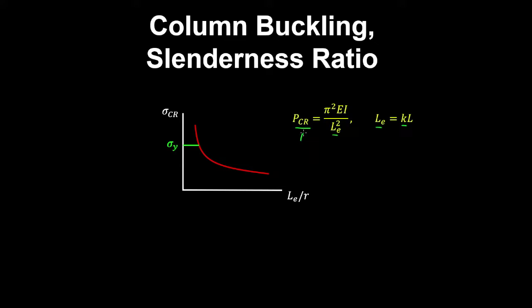Now if we divide both sides by the cross sectional area of the column, then we get the critical buckling stress is equal to pi squared times the Young's modulus.